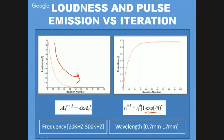Regarding the actual frequencies and wavelengths on which this algorithm works: the frequencies are 20 kHz to 500 kHz, which will be optimized in MATLAB coding, and the wavelength ranges from 0.7 to 17 mm.